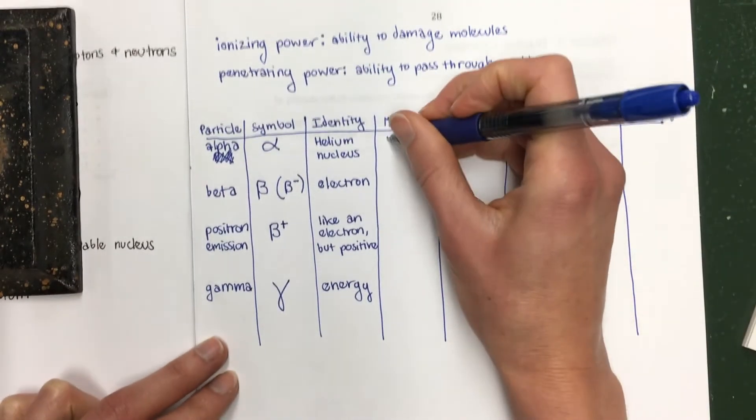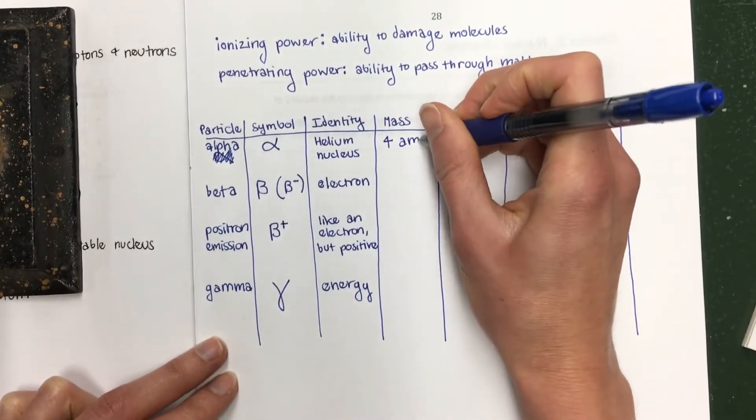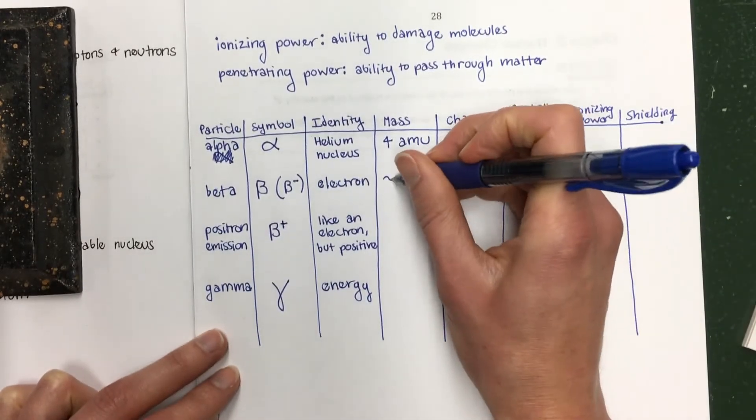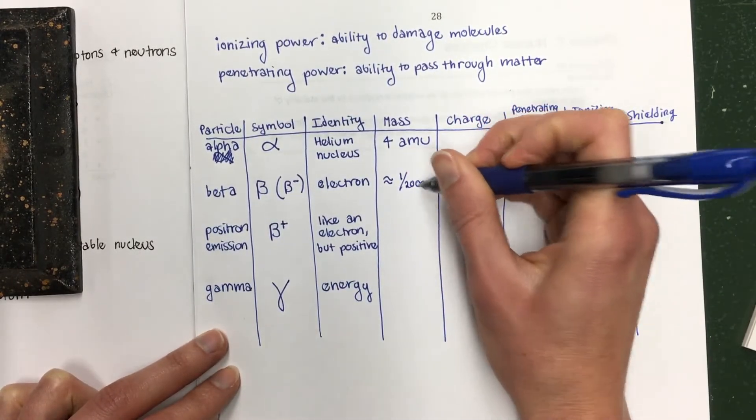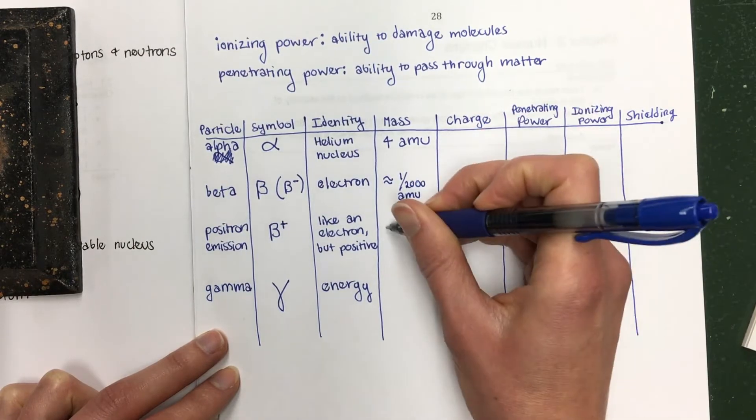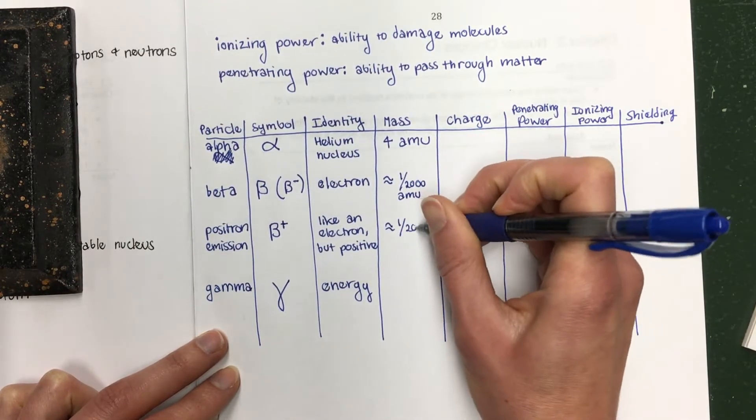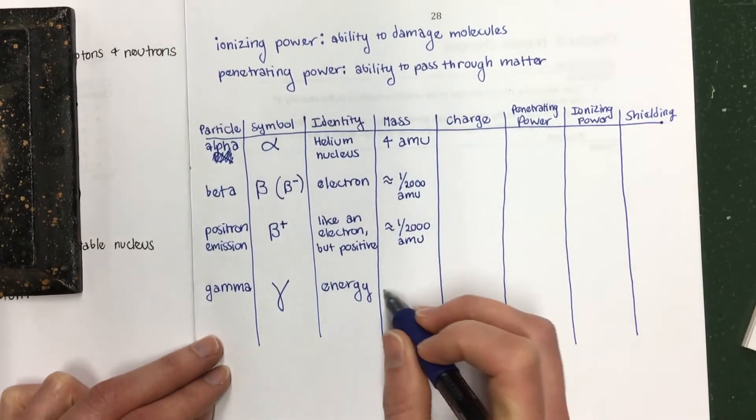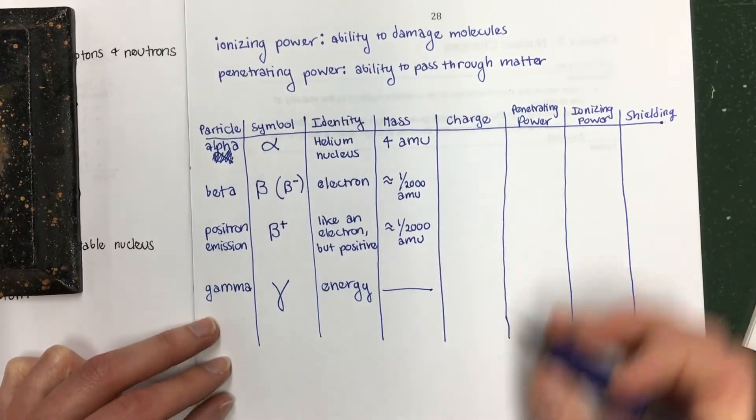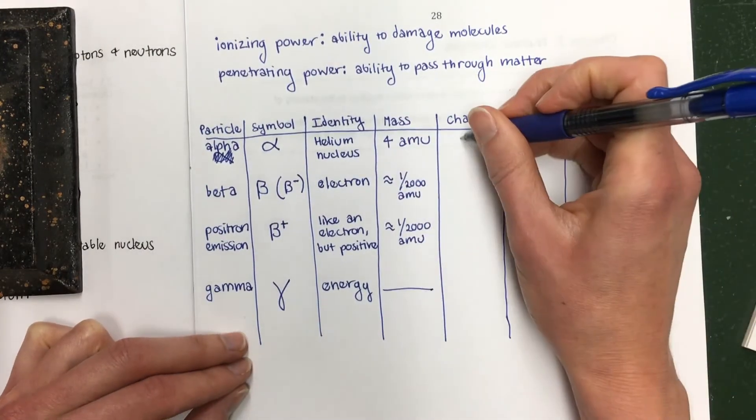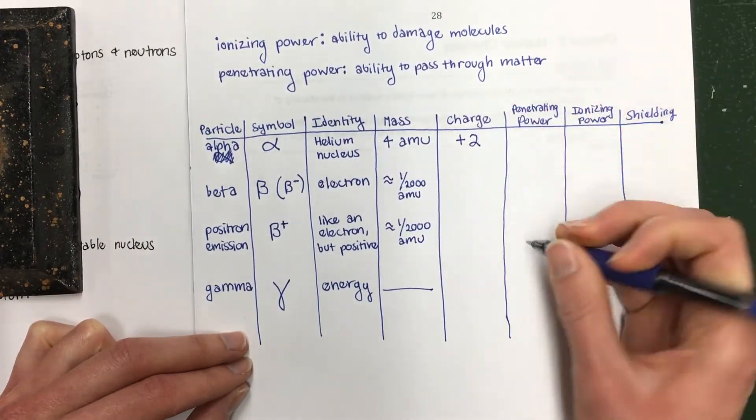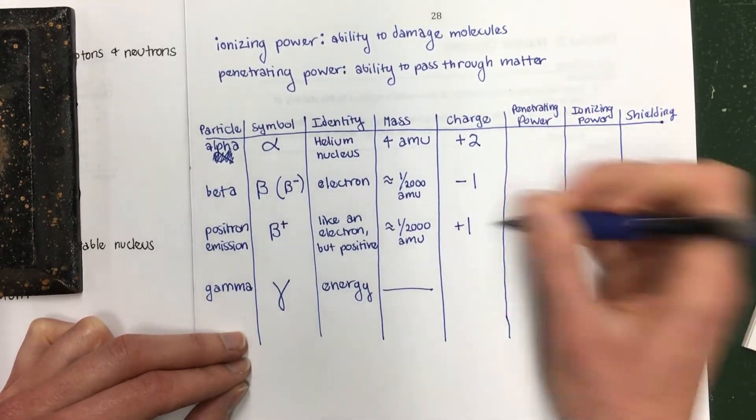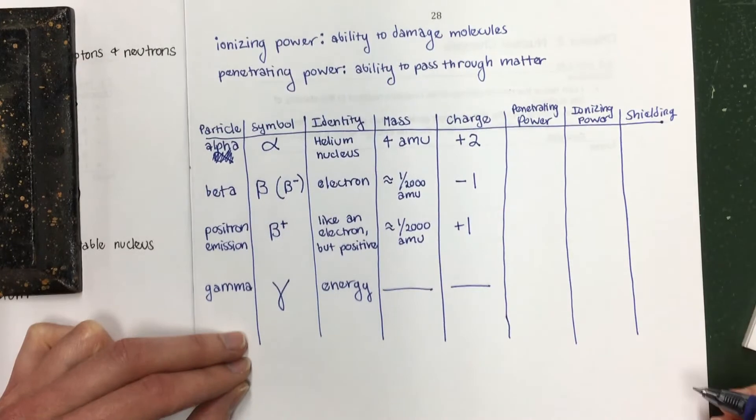A helium nucleus has a mass of 4 amu. A beta particle, since it's an electron, its mass is approximately one two thousandth of an amu. Same thing with the positron. And since gamma is just energy, it doesn't have a mass. Charge: alpha particles have a charge of positive two. Beta is going to have a charge of negative one, because it's like an electron. Positron would be a positive one. Gamma does not have a charge.